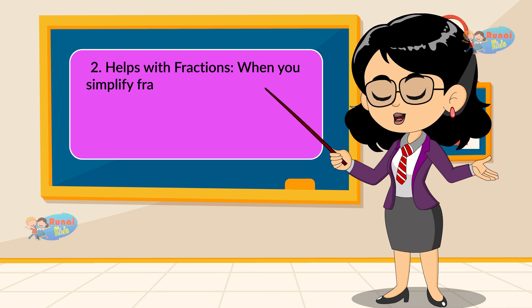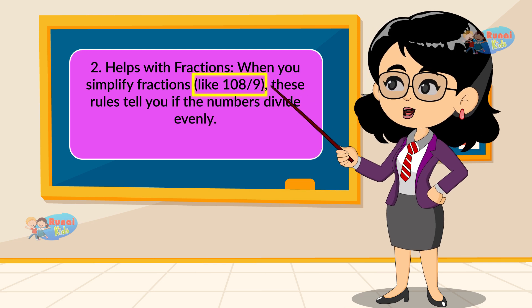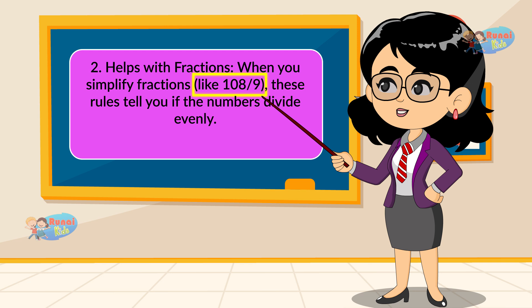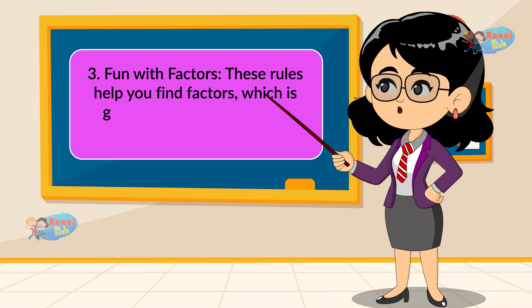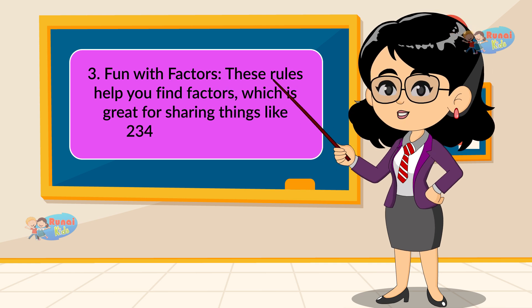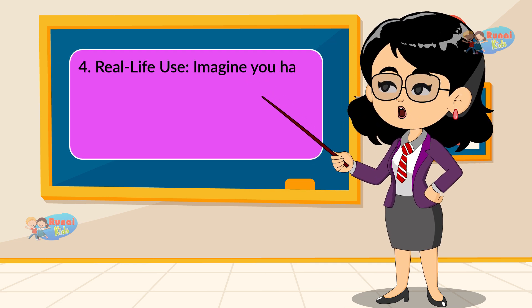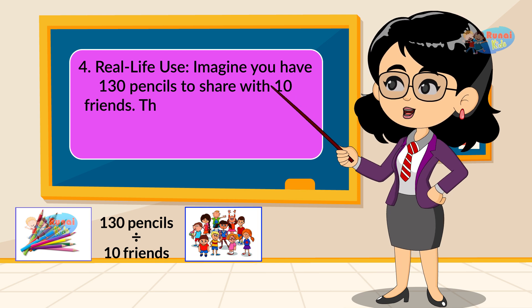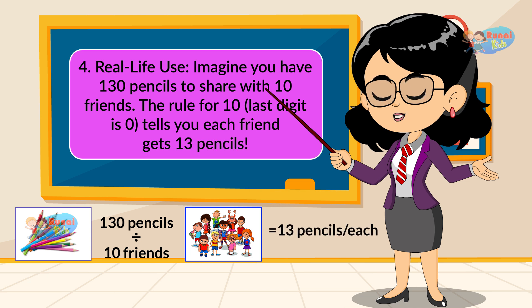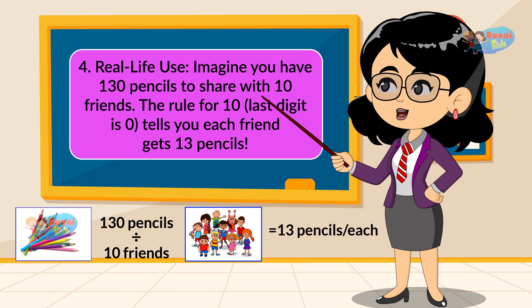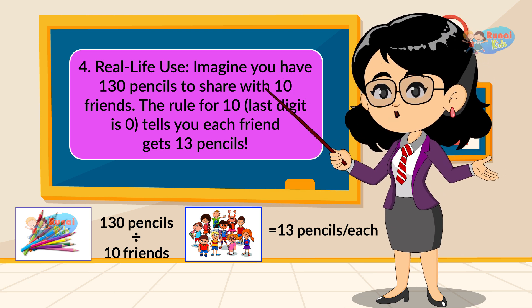They help with fractions too. When you simplify fractions like 108 divided by 9, these rules tell you if the numbers divide evenly. They are also fun with factors — these rules help you find factors, which is great for sharing things like candies equally. Real life use: imagine you have 130 pencils to share with 10 friends. The rule for 10 — last digit is 0 — tells you each friend gets 13 pencils. These shortcuts make math faster and more fun, especially with big 3-digit or 4-digit numbers.